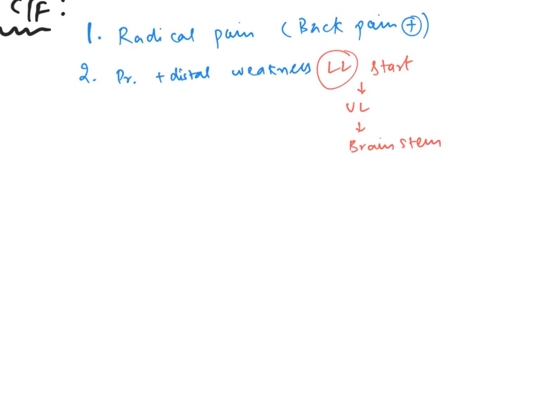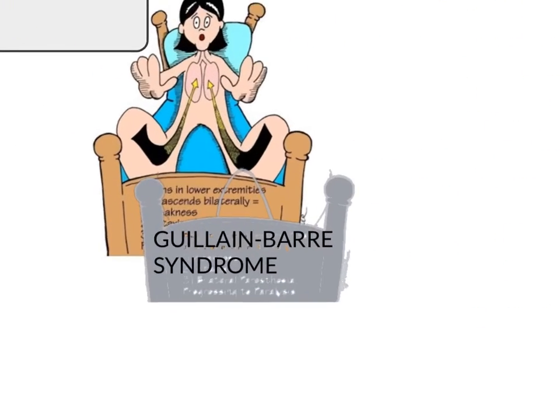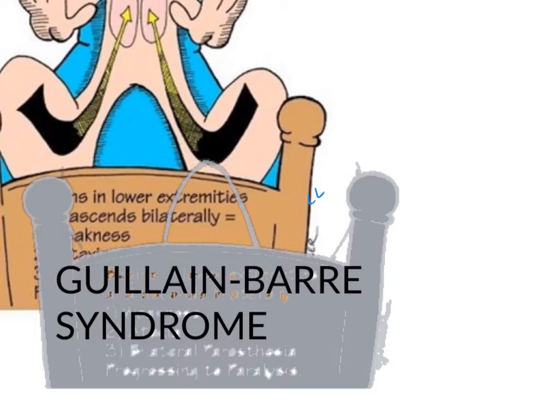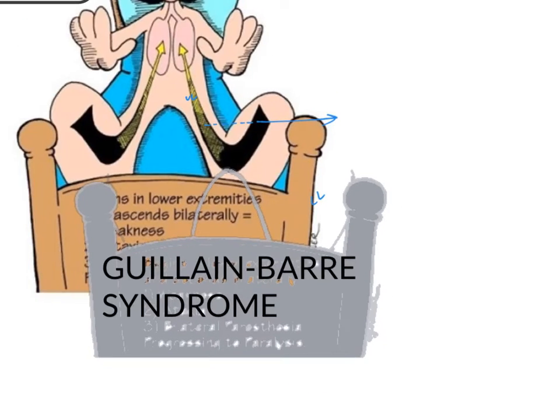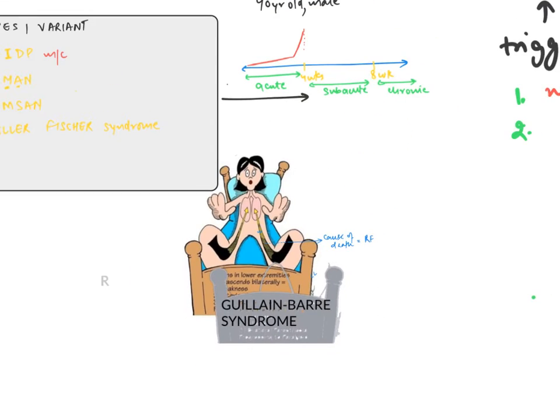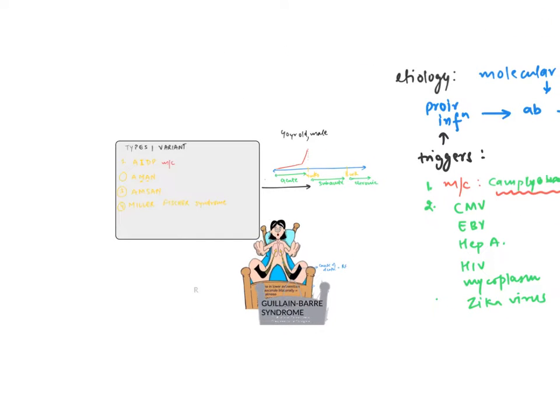The third point is respiratory muscle involvement. This is a major part. See in this diagram, it travels from lower limb to upper limb, and in between you can see the respiratory diaphragm. This can be a cause of death - respiratory failure. In Guillain-Barre syndrome, the mortality rate is 10 to 15 percent and recovery rate is 80 to 85 percent. One of the major causes is respiratory failure.